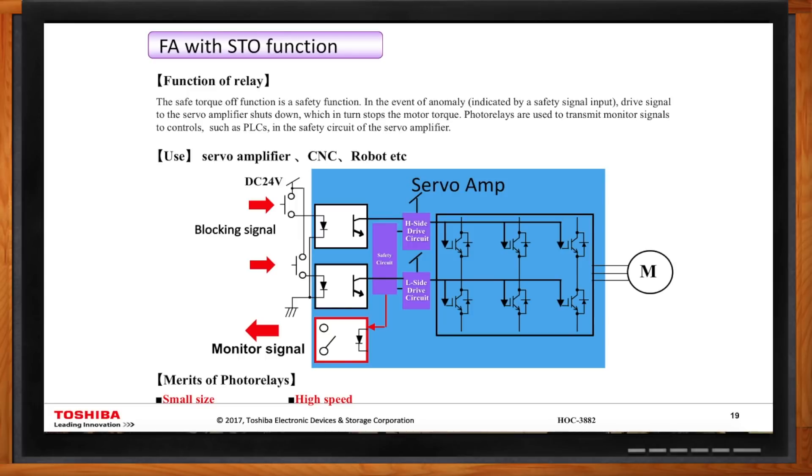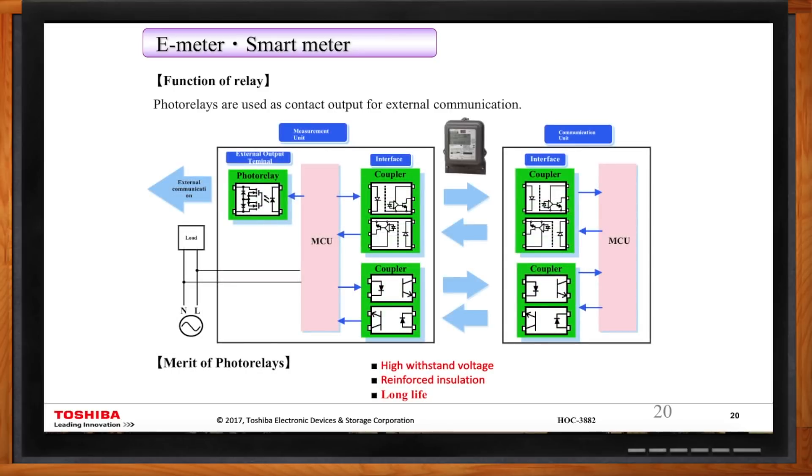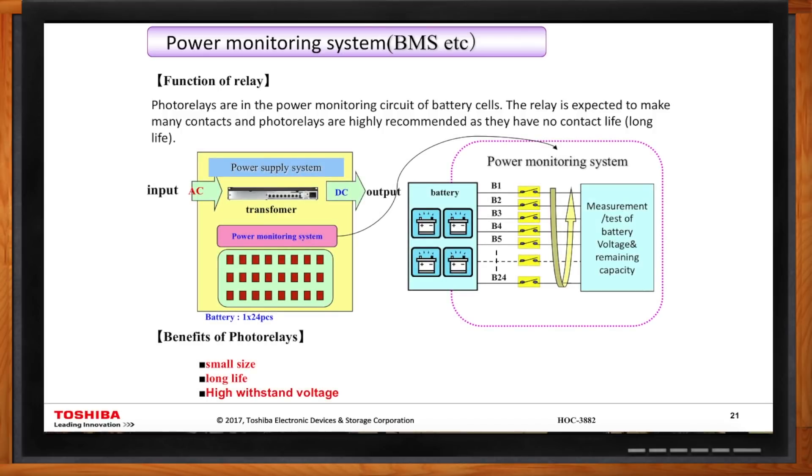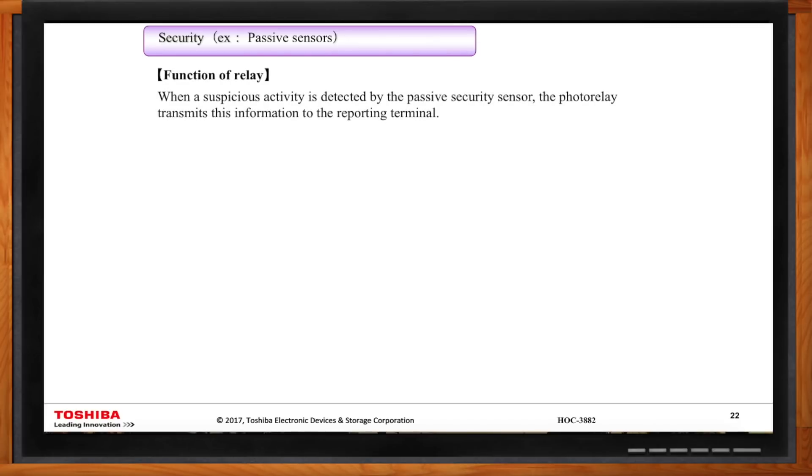There are many, many other applications, and just to name a few, for example, like e-meter, smart meter, where you need to have some type of external output communication, photo relay will come into play because in this particular type where breakdown voltage is important, and we have photo relays that with very high breakdown voltage to help you to address this particular application. Another example would be a power monitoring system like battery management system where, once again, you're packing a whole bunch of photo relays together, and you're going to be seeing a lot of charge, discharge type of functions going on, and photo relay can really play a big part of it where you're going to see much longer reliability, and the small size of our photo relays can add a lot of advantage to this kind of application.